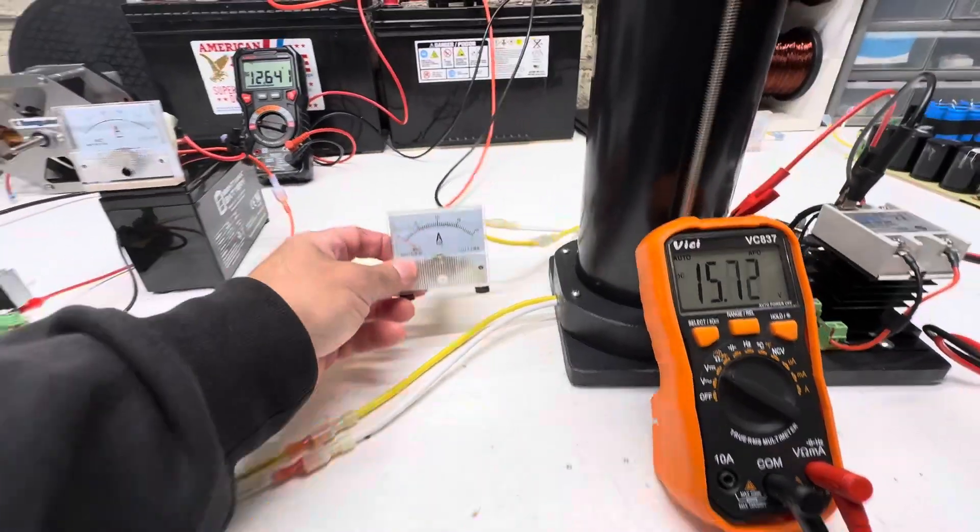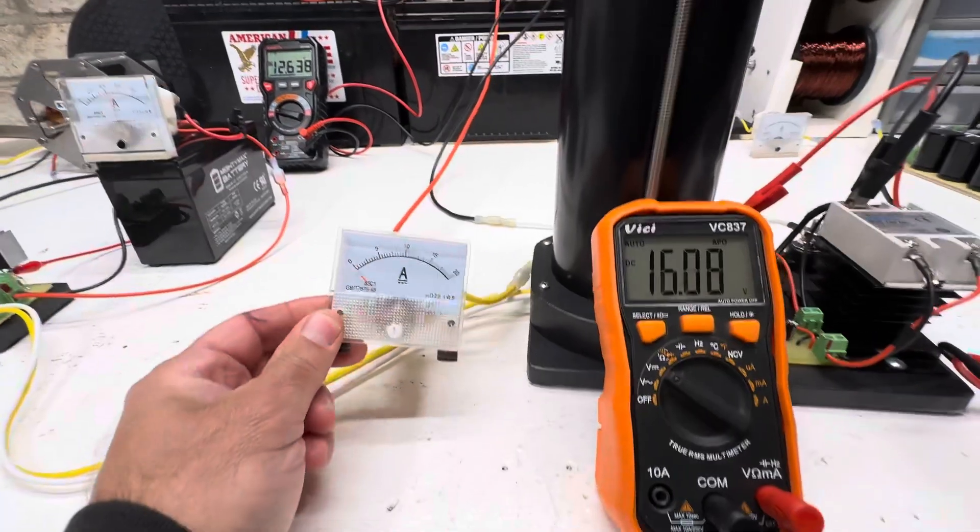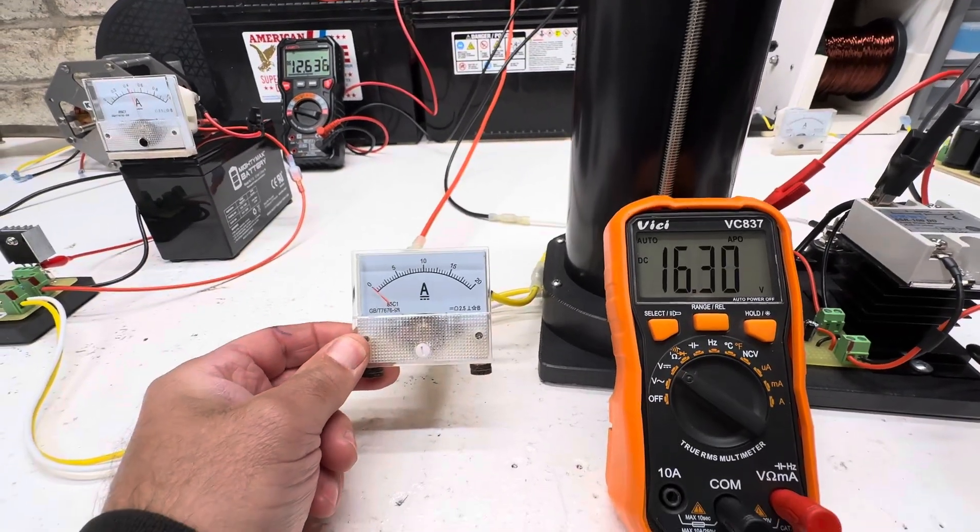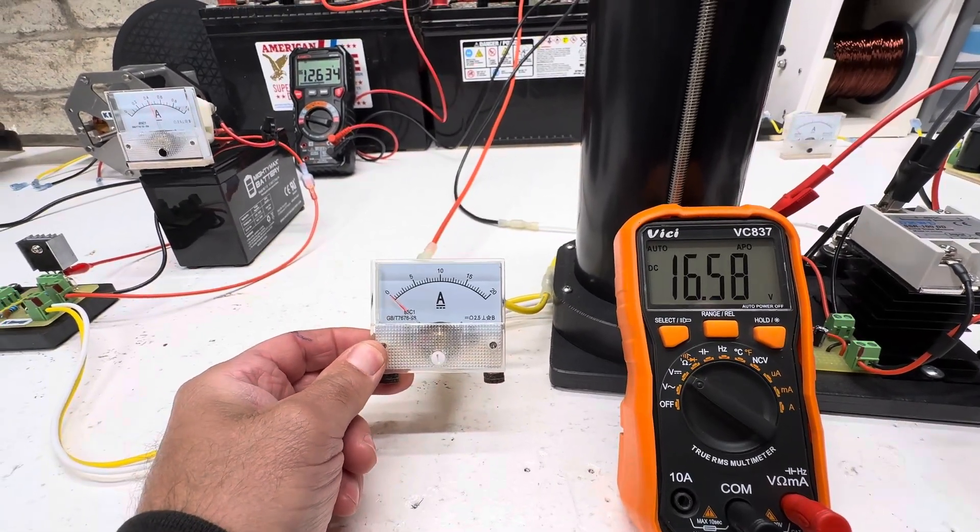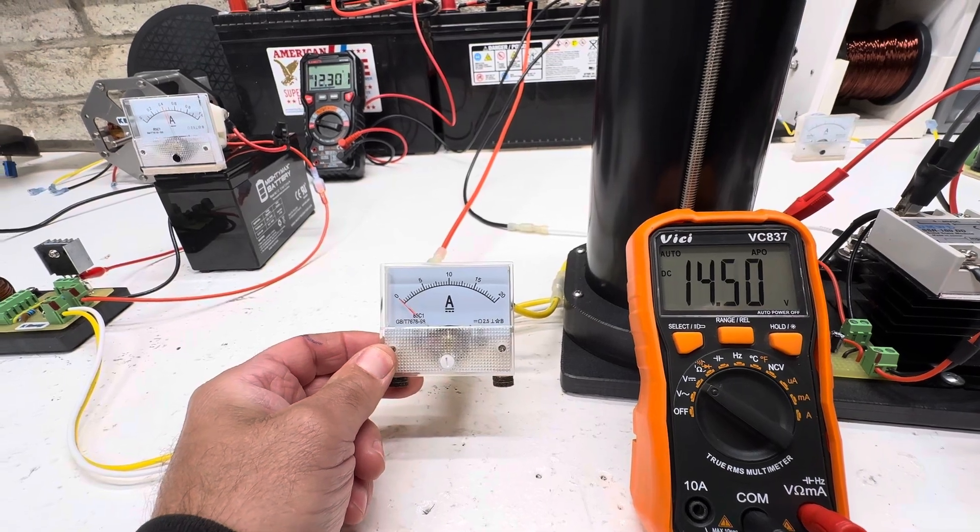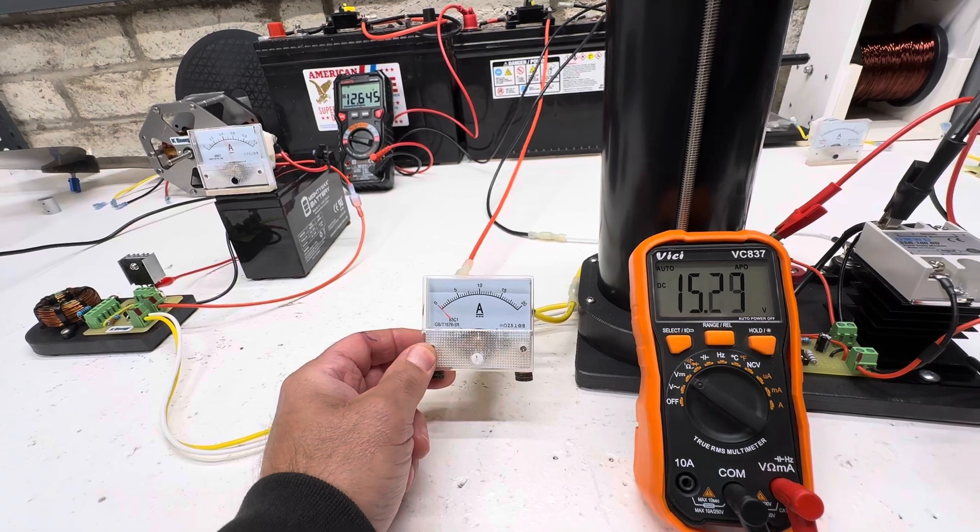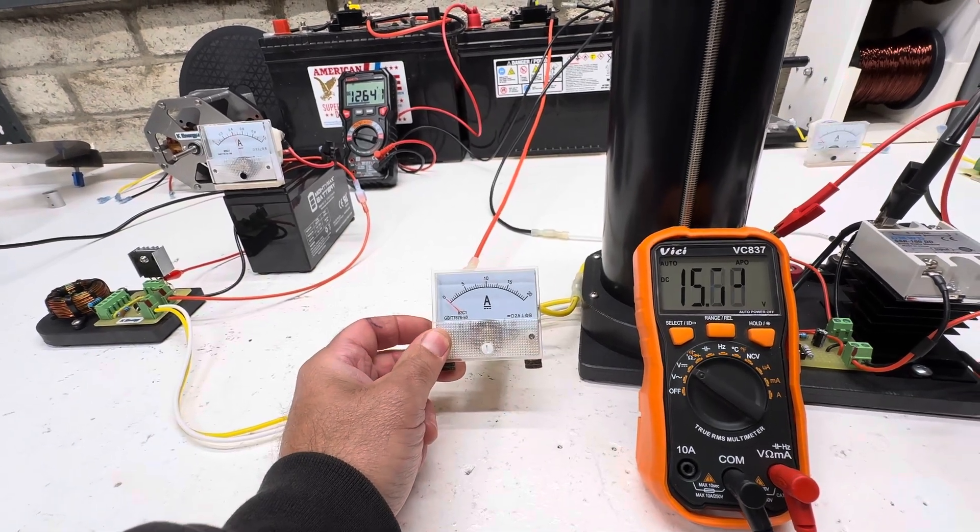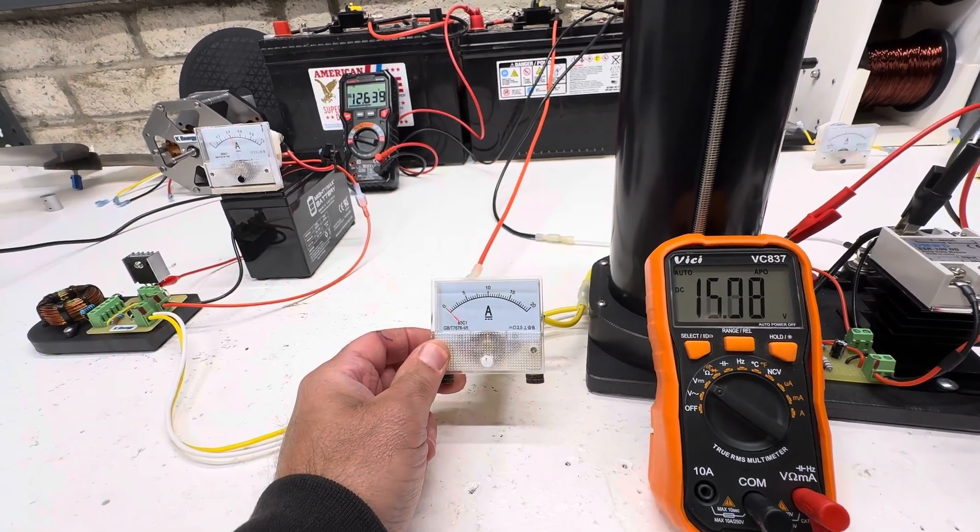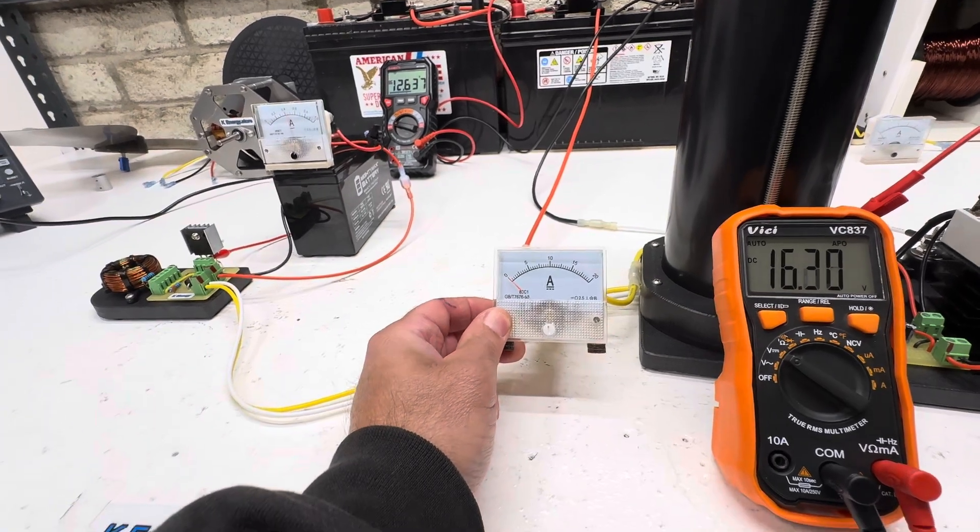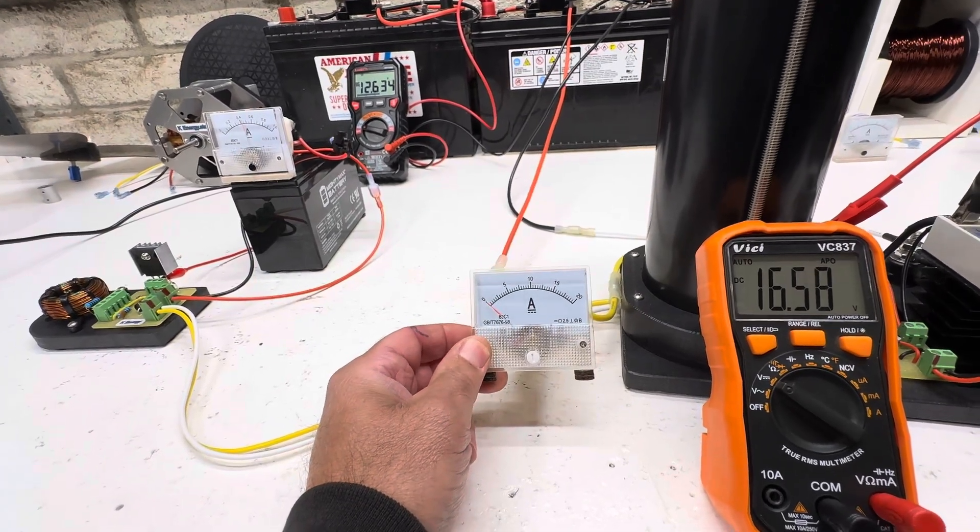So let's bring this in here so you can see this better. It takes about 15 seconds to charge this thing up to about 16.6, 16.8. And then we're discharging over 20 amps because it's a 20 amp meter and it's going all the way over.